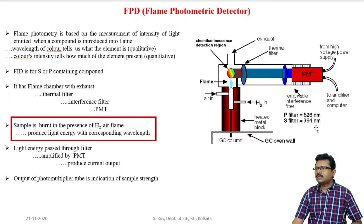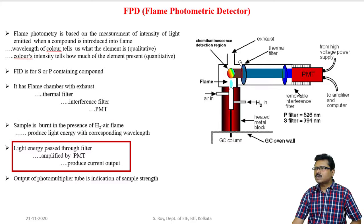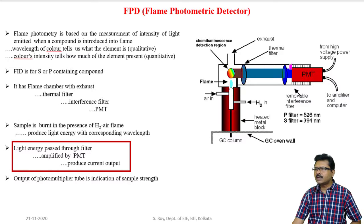For the case of sulfur, the light energy has a wavelength of 394 nanometers. For the case of phosphorus, the light energy has a wavelength of 526 nanometers. The light energy passes through a thermal filter and then through an interference filter. The thermal filter allows only visible and ultraviolet rays. Monochromators are normally used as the interference filter, which allows light energy with a single wavelength. When we want to detect whether there is phosphorus in the sample, a specific monochromator is used that allows only light energy with 526 nanometers.